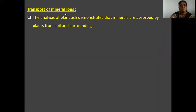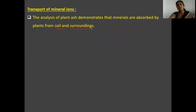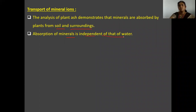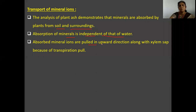The analysis of plant ash demonstrates that minerals are absorbed by the plant from soil and surroundings — when plant parts are burnt, we get ash. The absorption of water and mineral ions is independent; minerals are absorbed separately along with water, and these absorbed minerals are pooled upward along with the xylem sap because of the transpiration pull.